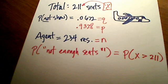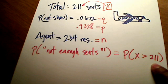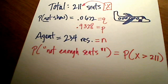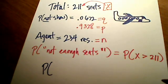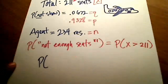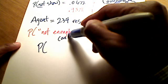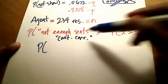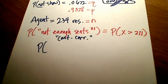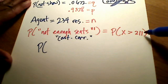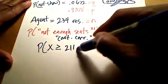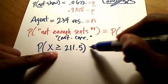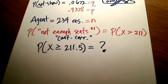This is a discrete number, and we're going to use the normal distribution to find this probability. That means I need to change this into a continuous data value using continuity correction. Since I do not want to include 211, but strictly greater than 211, continuity correction says I'm really looking for x greater than or equal to 211.5.